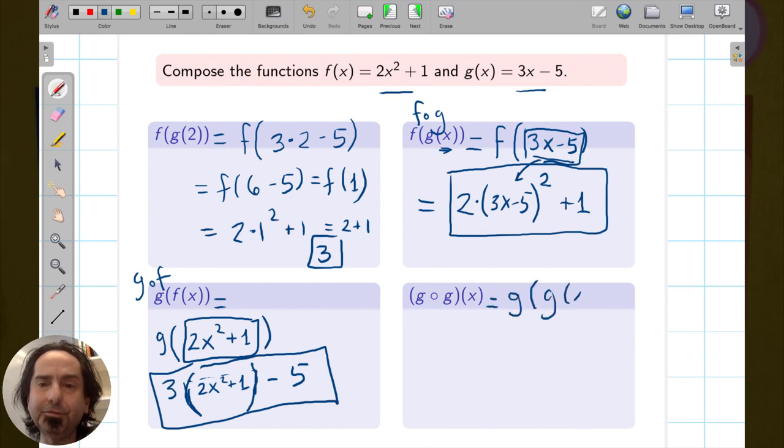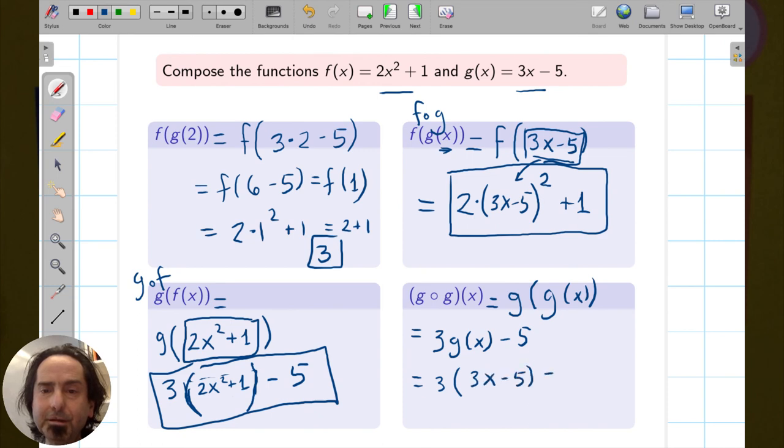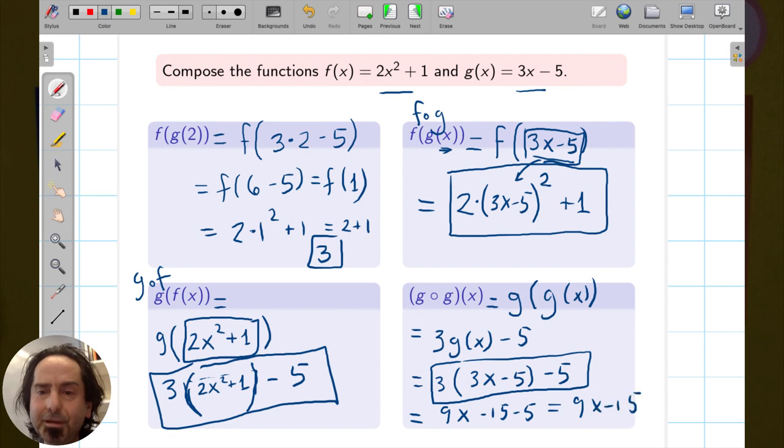Let's figure out g composed with g of x. That's just g(g(x)). And we can write it like this. Another way to do this is to work from the outside. So if I want g(g(x)), that means I want 3 times g(x) minus 5. And that equals 3 times (3x - 5) minus 5. And there's the answer. But if you want to simplify it, you could multiply this out. That's 9x - 15 - 5, which is 9x - 20. You have to know how to simplify. But if you're not asked to simplify, why bother?